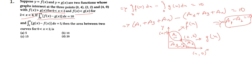For the second equation, we are given that the integration over 2 to 4 of [g(x) - f(x)] equals 5. So we have: integral from 2 to 4 of g(x) dx minus integral from 2 to 4 of f(x) dx equals 5.